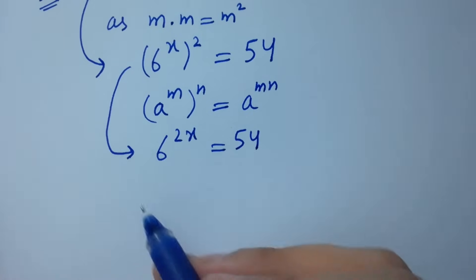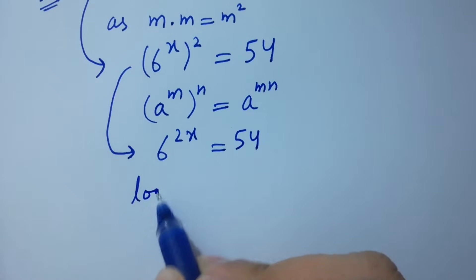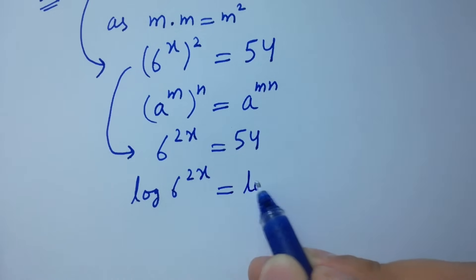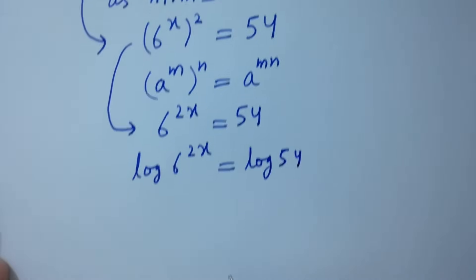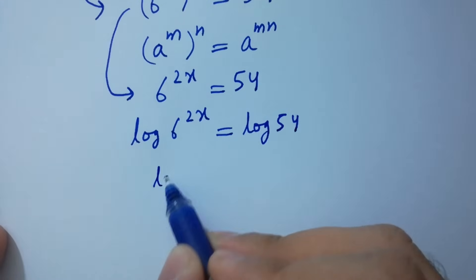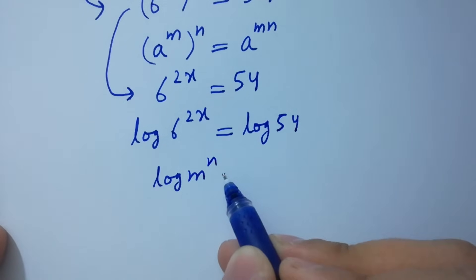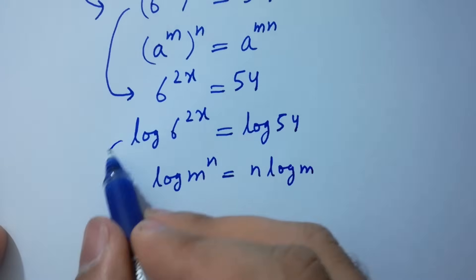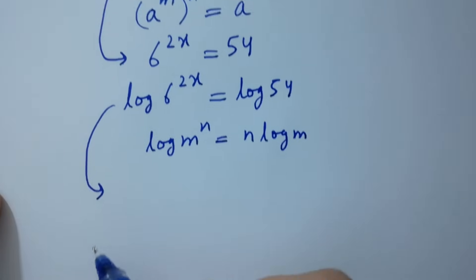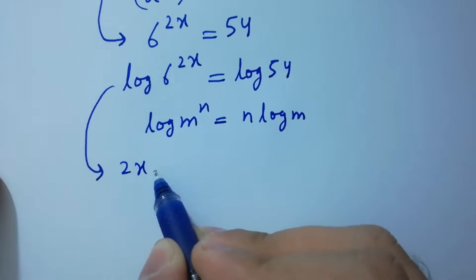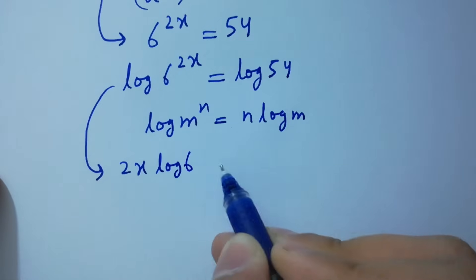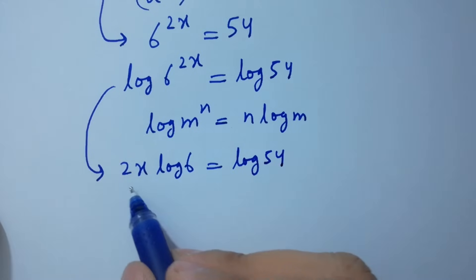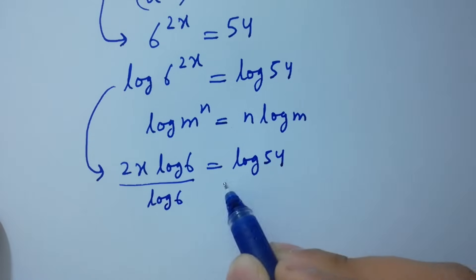Take log on both sides. Log 6 to the power 2x equals log 54. Using the rule log m to the power n equals n log m, it will be 2x log 6 equals log 54. Divide by log 6 on both sides.